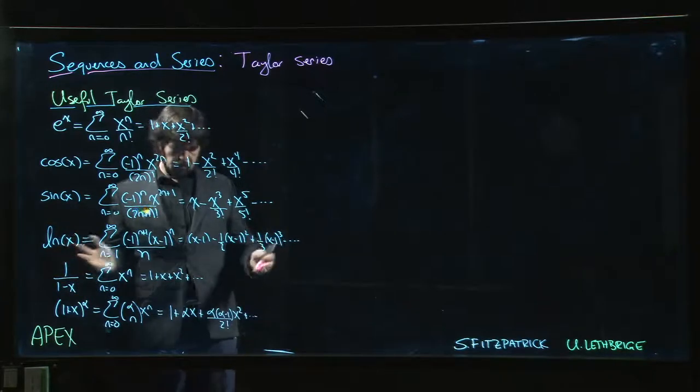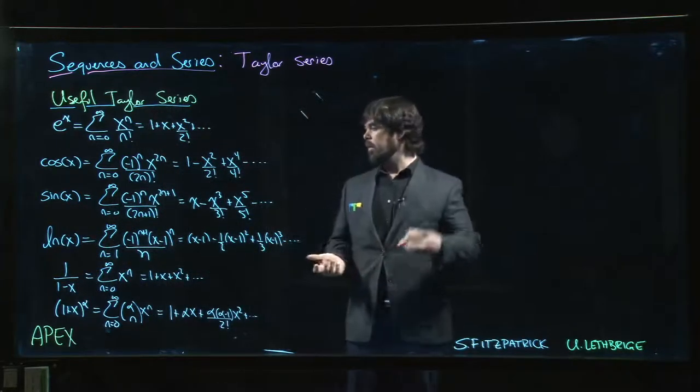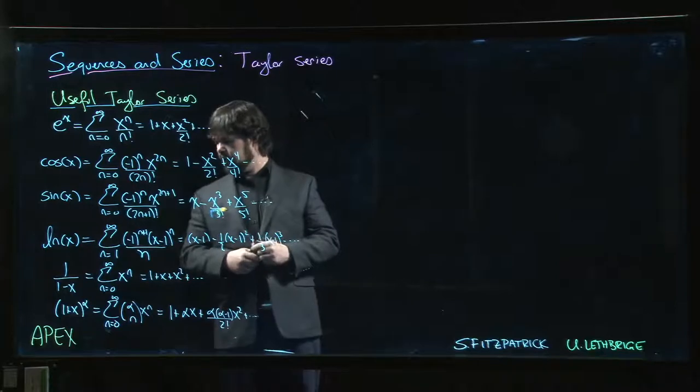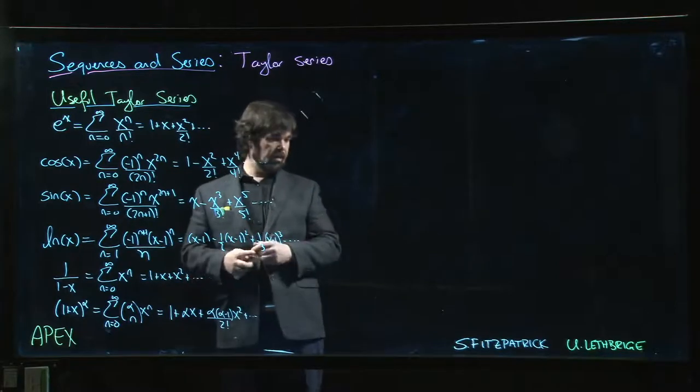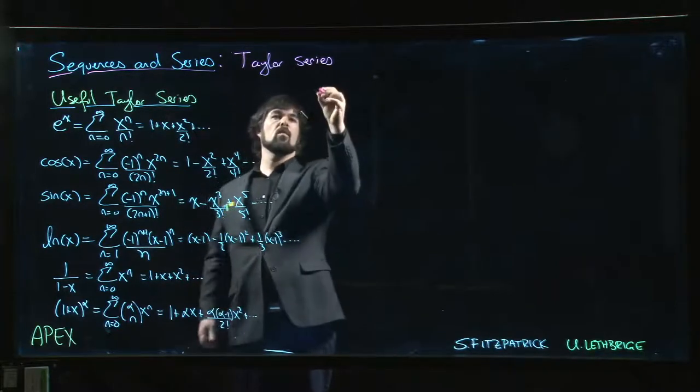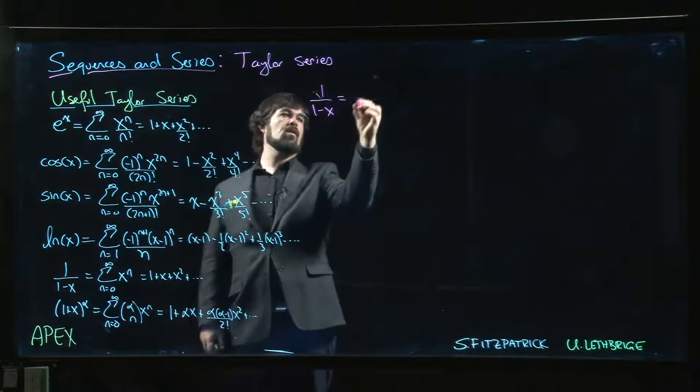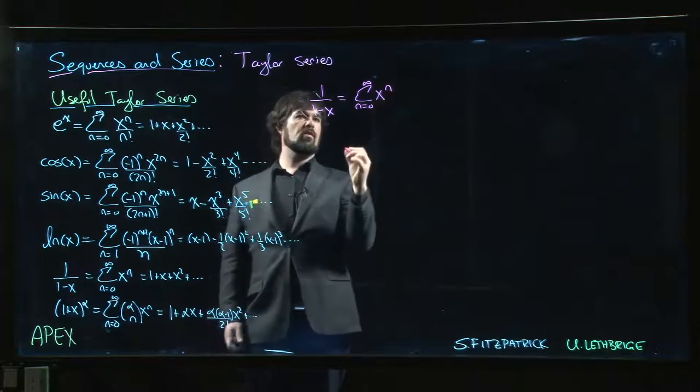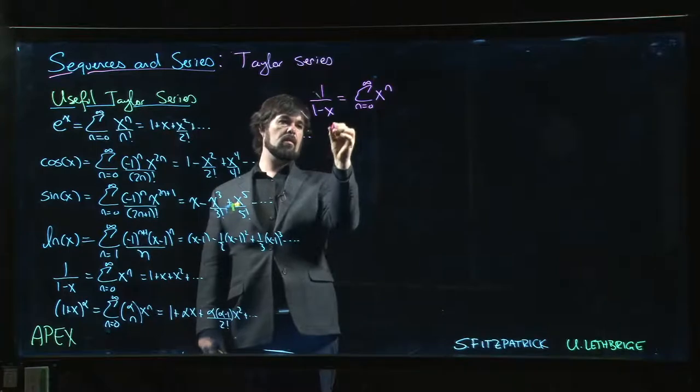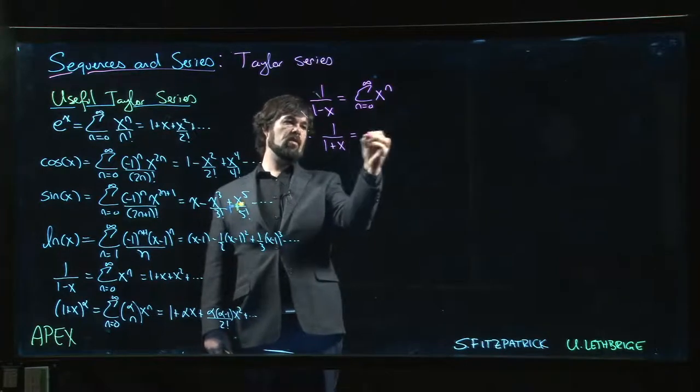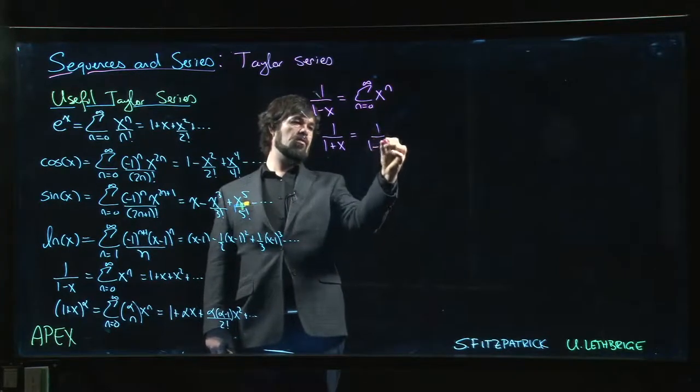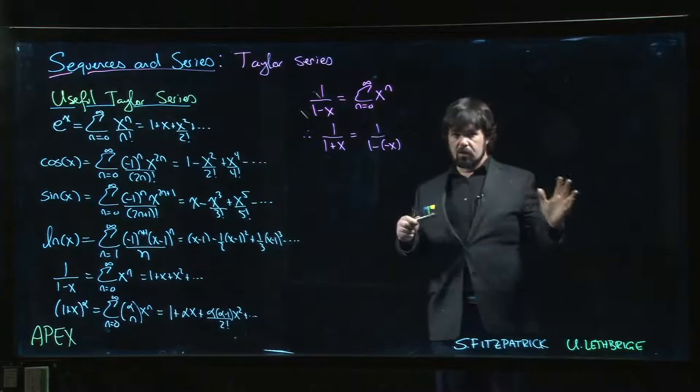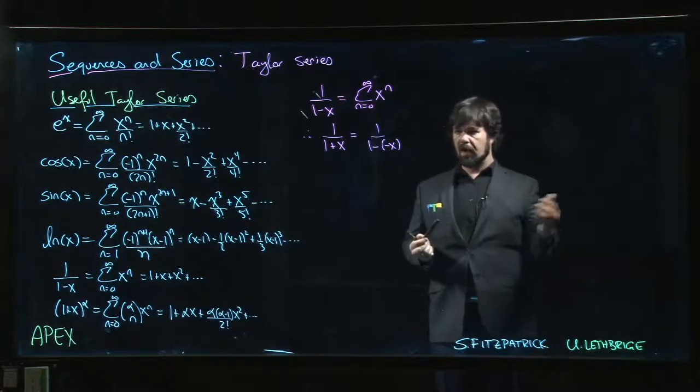There are things like that you can do. Another example where we can make use of this: we can quickly say, and we mentioned this in the last video on binomial theorem, that 1 over 1 minus x, well that's the sum n going from 0 to infinity of x to the n. That means that 1 over 1 plus x, that's 1 over 1 subtract minus x.